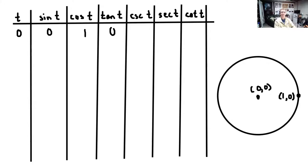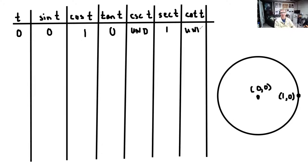Cosecant is the reciprocal of sine, so it's 1 over 0, which is undefined. Secant is the reciprocal of cosine, so 1 over 1 is just 1. And cotangent is the reciprocal of tangent — tangent is 0, so cotangent is also undefined.